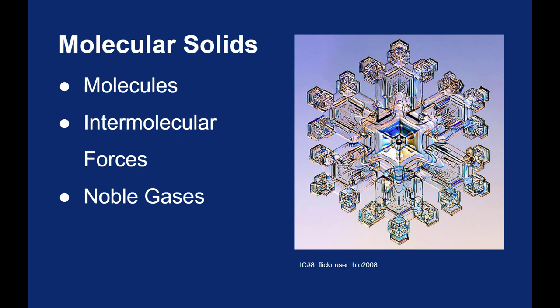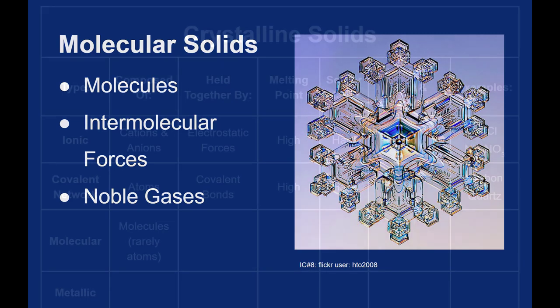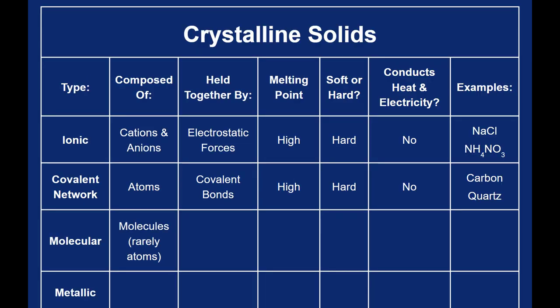So though it's composed of individual atoms, we would still call it a molecular solid. So the key in defining these types of crystalline solids is not necessarily what they're made up of. A molecular solid can be made up of atoms, even though they're normally made up of molecules. The key in defining what type of crystalline solid you have is what forces are holding them together.